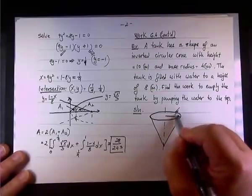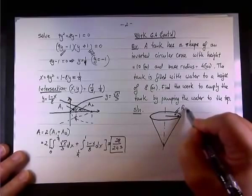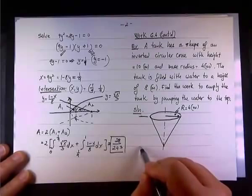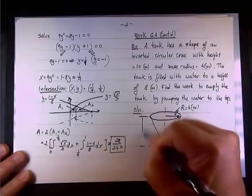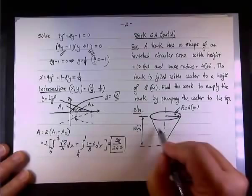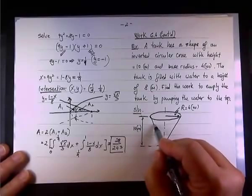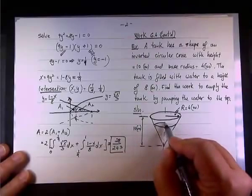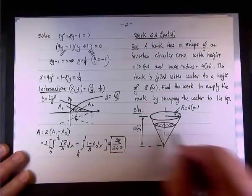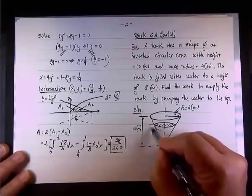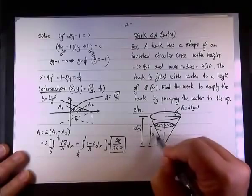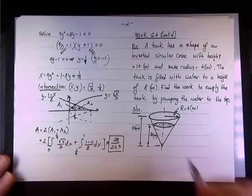The radius is 4, so this will be r equals 4. The height is 10 meters. And we fill the water all the way to a height of 8 meters. So let's say we have up to here, we have water, right, like so. So this is 8 meters.